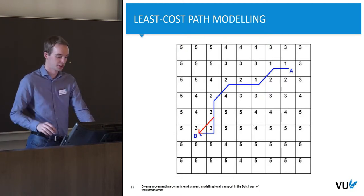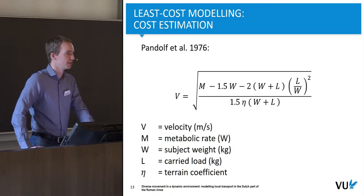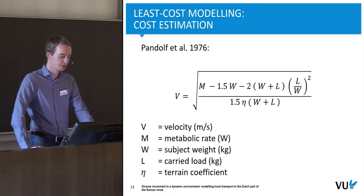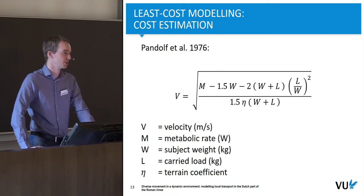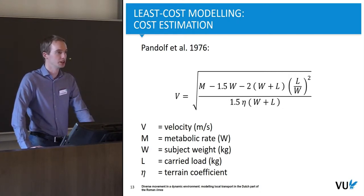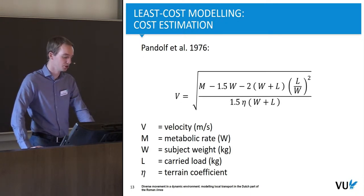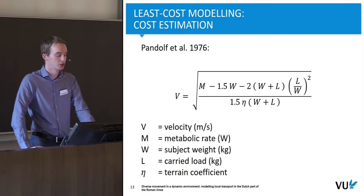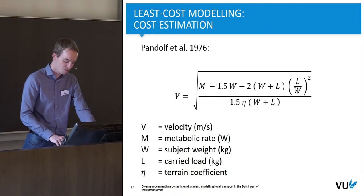In archaeology, transport is often reconstructed through least cost path modeling. The concept is simple: there's an arbitrary cost unit and people try to minimize that cost while going from A to B. I've taken time as the cost unit and used a specific cost equation for reconstructing walking as a mode of transportation. This allows me to include a carried load — represented by L in the formula, such as a bushel of grain — and also a terrain coefficient, which is very useful because it lets me include the paleogeographic units in my map. Most studies use slope as a cost unit, but in the Netherlands this is not really relevant.